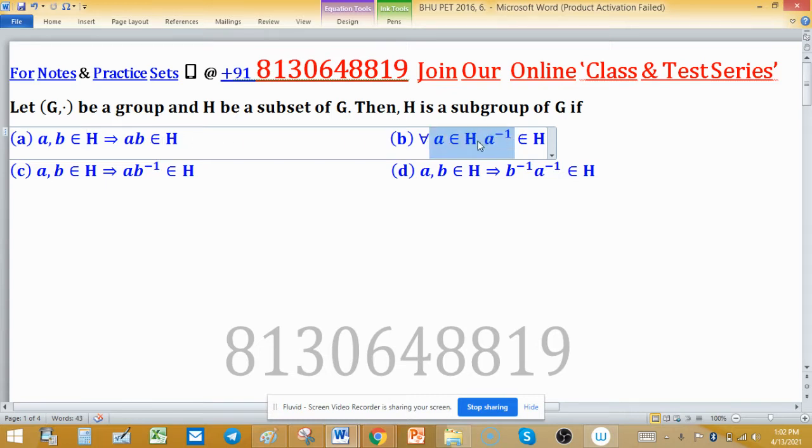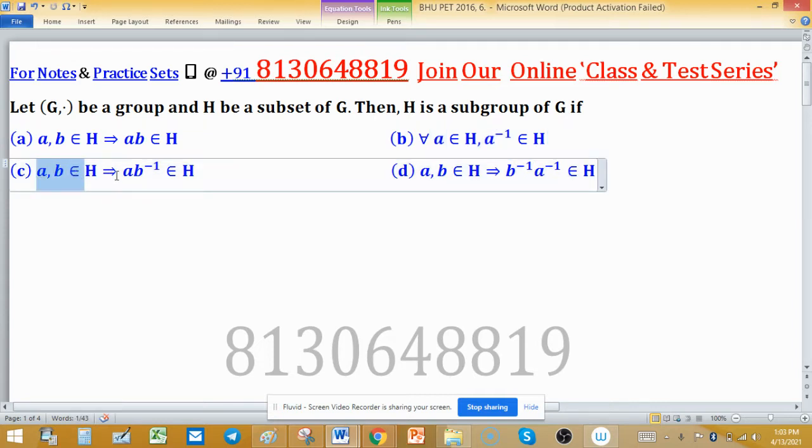For all A belongs to H, A inverse also belongs to H. AB belongs to H implies AB inverse belongs to H. And in option D, AB in H then B inverse A inverse in H.